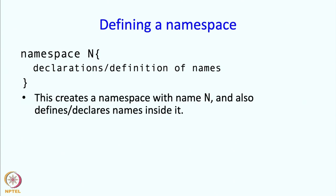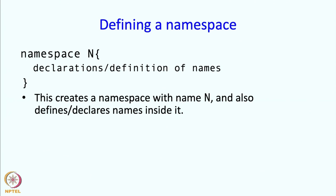This creates a namespace with the name n and also defines or declares names inside it. You can add more names into a namespace simply by writing namespace n again and putting names inside that new block in the new position.